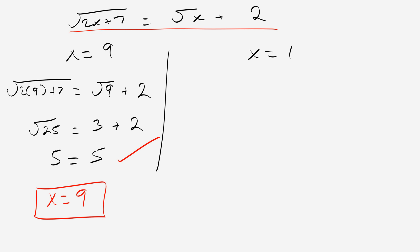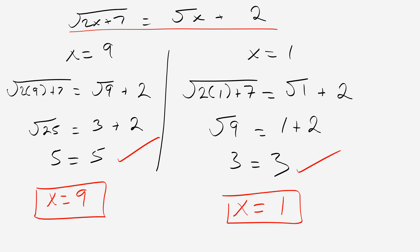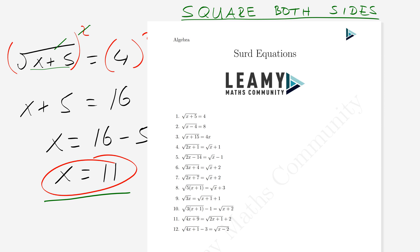Now checking x equals 1: the square root of 2 times 1 plus 7 — does that equal root 1 plus 2? 2 plus 7 is 9, so root 9. Does that equal 1 plus 2? Is 3 equal to 3? Yes. So x equals 1 is also an allowable solution. That covers radical equations. The best thing to do now is practice a few of these and check your solutions. Please subscribe for worked and more detailed solutions.